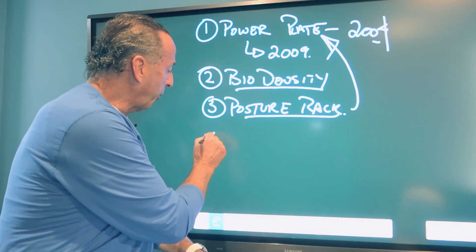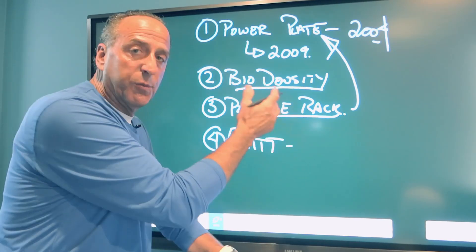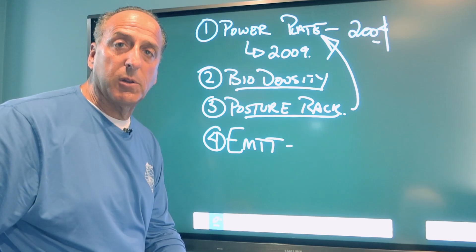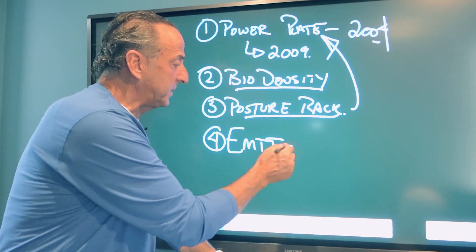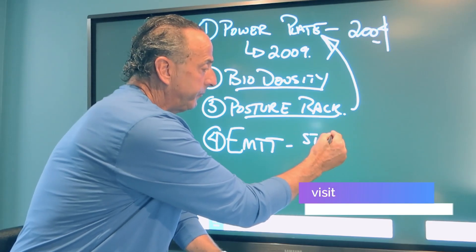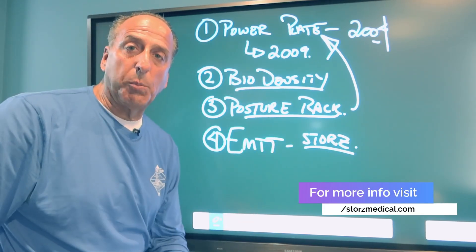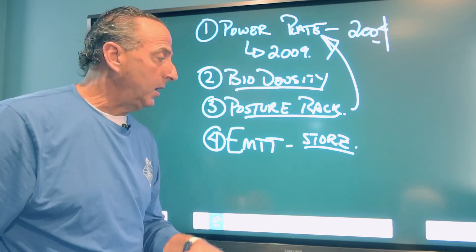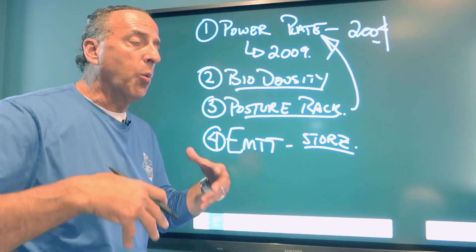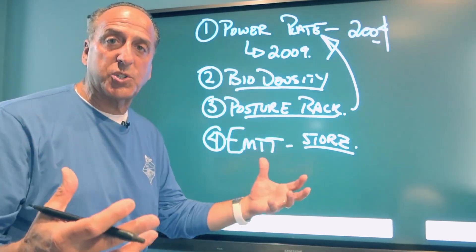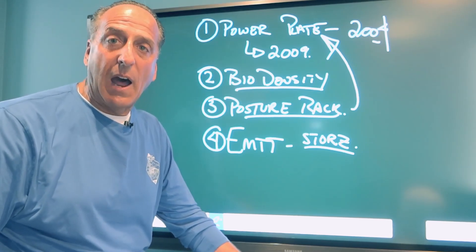The fourth thing we use is EMTT. There's some other video clips I'll put in the link below. This is electromagnetic transduction therapy from Stortz Medical out of Switzerland. This helps stimulate osteoblastic activity. It also helps with disc issues. The more load you're putting through the bone, you want to stabilize that structure the best you can. We have two of these machines that run all day, every day.